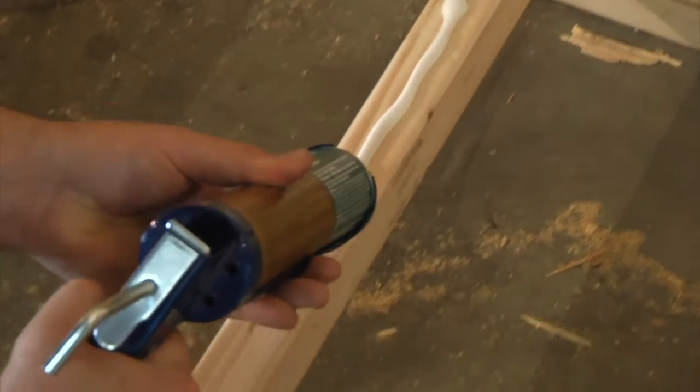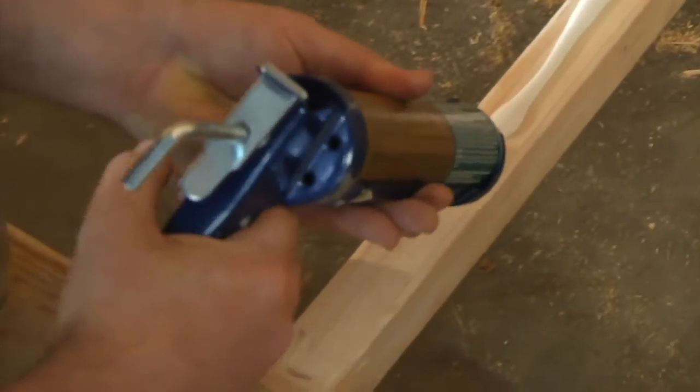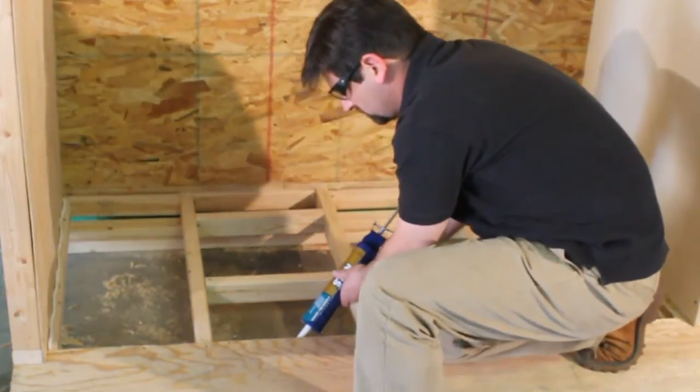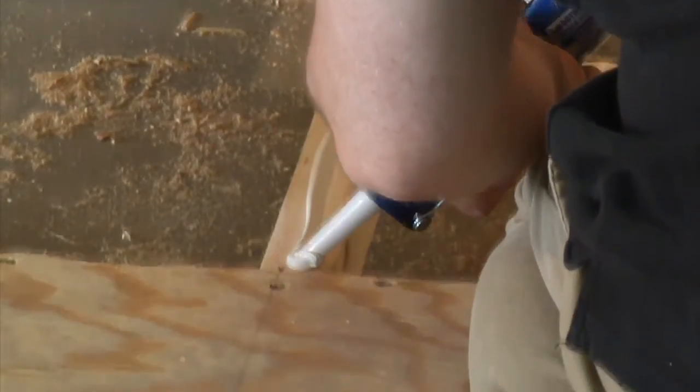You'll glue the pan to the floor joists and blocking, using any standard construction adhesive. Utilizing the construction adhesive, glue every one of the blocks you've put in and all the floor joists, the same way you would glue down the subfloor itself.